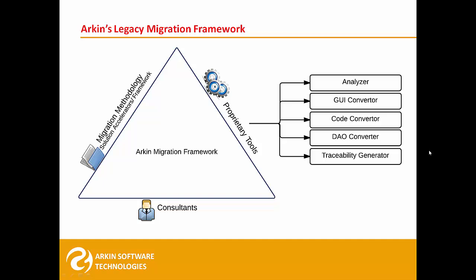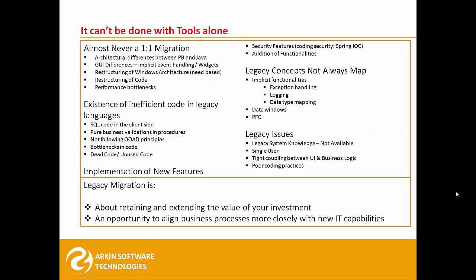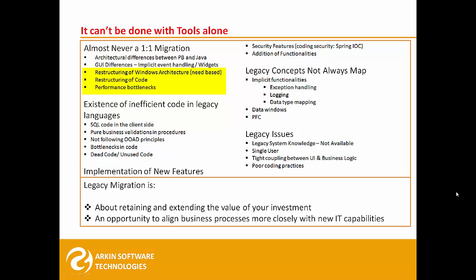One such area is refactoring, where auto-converted code is manually moved to different layers of the chosen architecture. No matter how efficient the conversion tools are, a migration project cannot be completed without manual effort. The reasons are many: the way technology works on legacy versus Java is very different, with implicit functionality like event handling and widgets; non-conformance with OOAD principles; bottlenecks in code; unused and dead code to be eliminated; and SQL code on the client side. Refactoring to suit a chosen architecture and expected performance metrics also requires skilled migration experts. Legacy concepts do not map properly to migrated code, and incorporation of exception handling and logging frameworks requires manual intervention too.